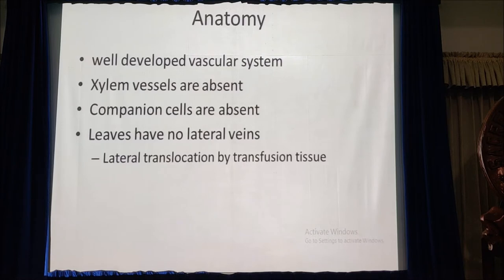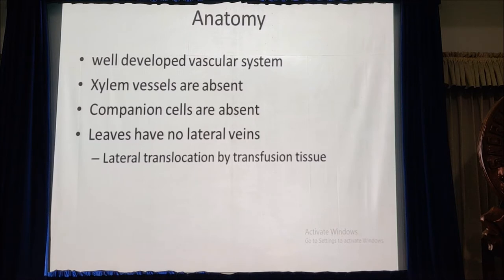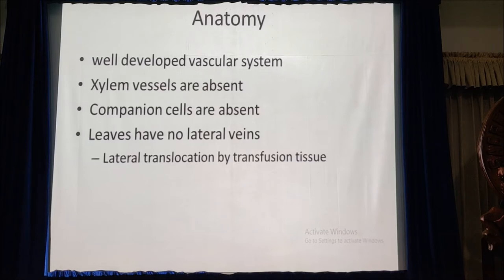Regarding the anatomy of gymnosperms, they possess a well-developed vascular system, and the vascular bundles are collateral and open. Xylem vessels are absent; the major function of conduction is performed by xylem tracheids. In phloem, companion cells are also absent. The stem shows secondary growth. Leaves possess thick cuticle and sunken stomata, and leaves have no lateral veins. So lateral translocation of nutrients is performed by transfusion tissue.